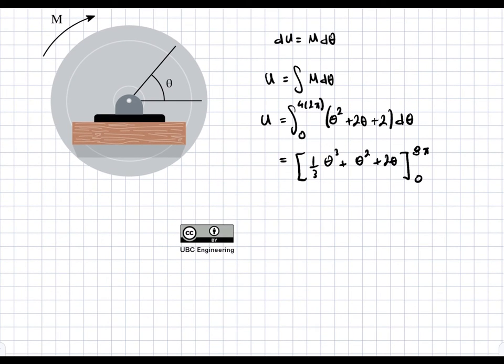We can go ahead and evaluate this. Since the lower bound is zero, you just plug in 8π into each of these thetas and evaluate.